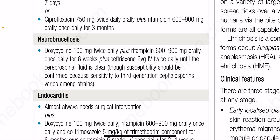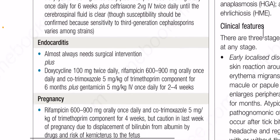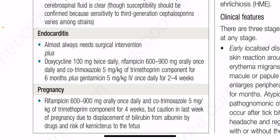For neurobrucellosis: doxycycline 100 mg twice daily plus rifampicin 600 to 900 mg orally once daily for six weeks, plus ceftriaxone 2 g IV twice daily until the cerebrospinal fluid is clear. Susceptibility should be confirmed because sensitivity to third-generation cephalosporins varies among strains.